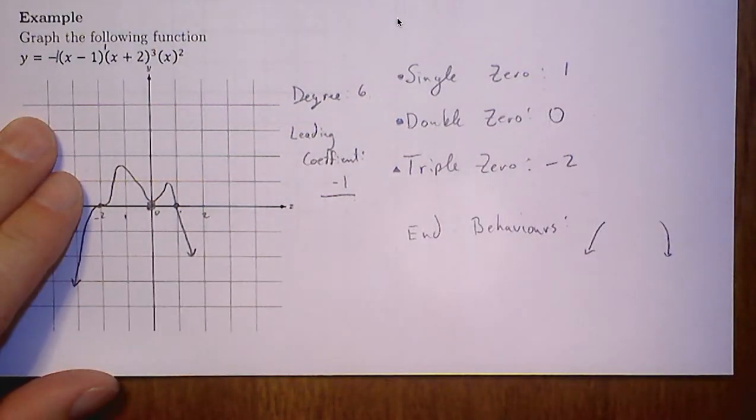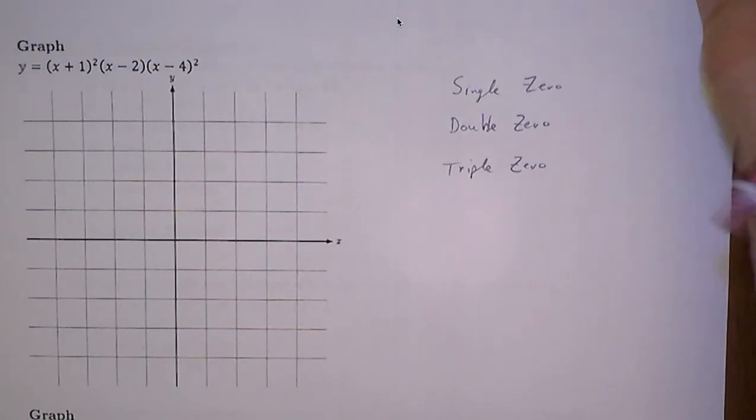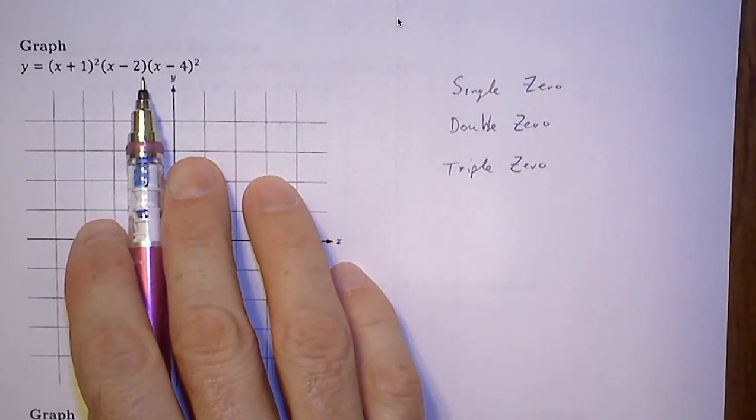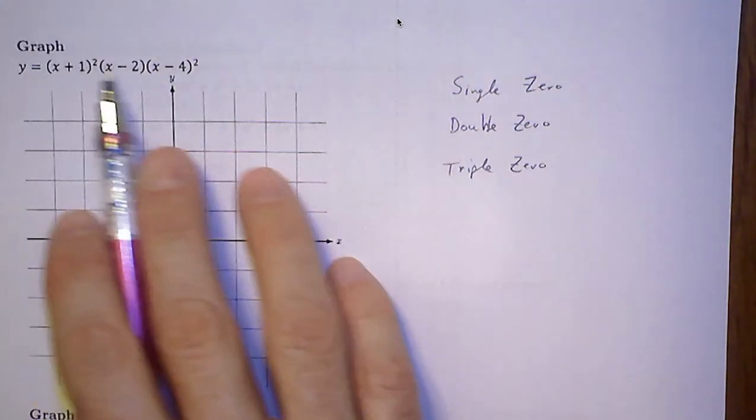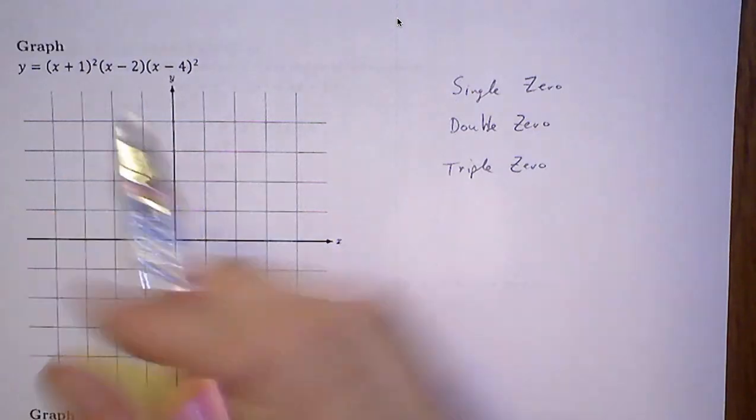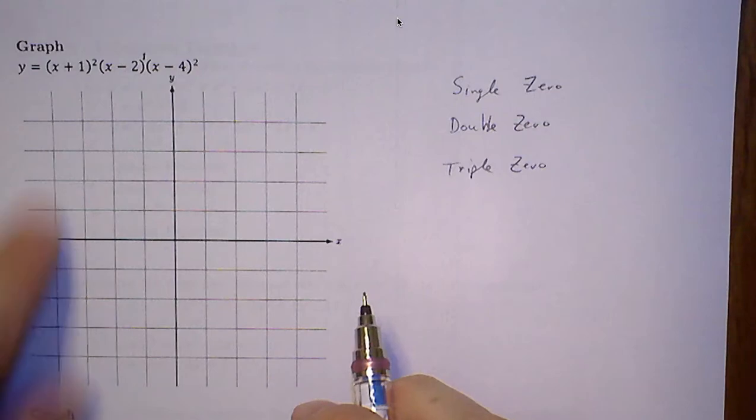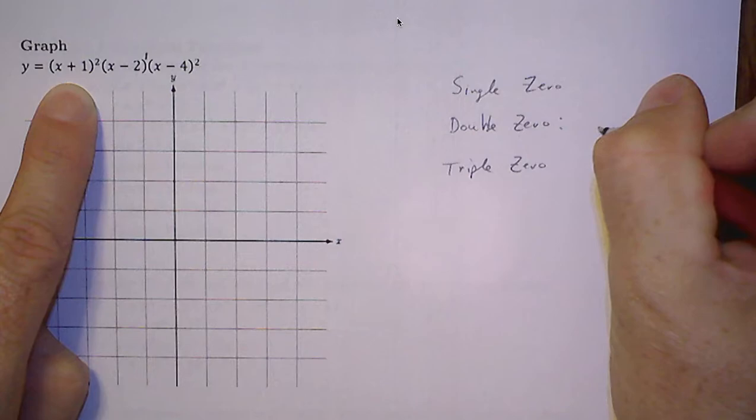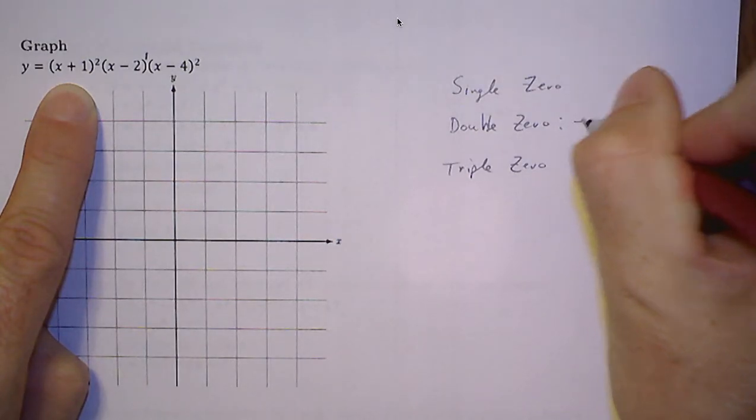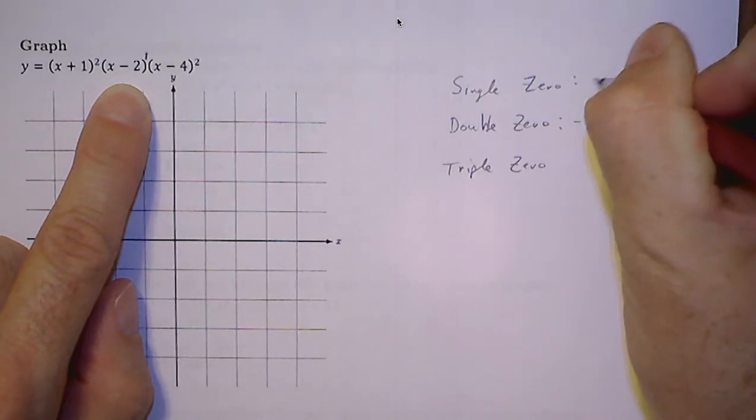Let's do another example. Perhaps I can go a little bit quicker through this example. I'm going to graph this function. I see that there are three factors. I am going to simply put 1 there to remind me that it's a single zero. This is going to be a double zero, so I know that I have a double zero when this factor is equal to 0. Negative 1, a single zero when this factor is 0, so that occurs when x is 2.